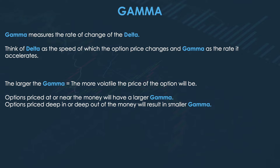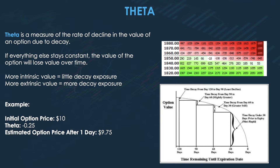Options priced at or near the money will have a larger Gamma; options priced deep in or deep out of the money will have a smaller Gamma. Since the option's Delta is only valid for a short period of time — because as the price fluctuates it's going to change — Gamma gives you an idea of how the Delta is expected to change as the underlying price moves. When an option is near or at the money, a small change in the underlying will have a big impact on demand for that contract, whereas for deep in or deep out of the money options, demand won't change much.